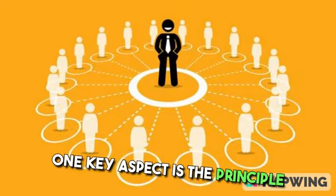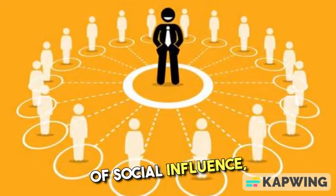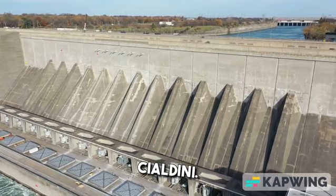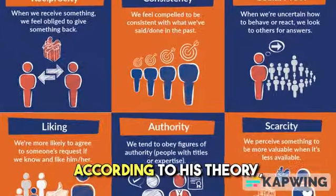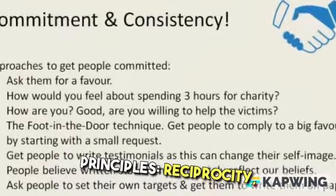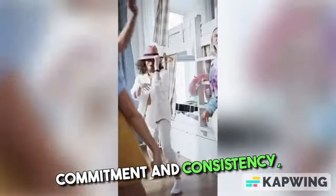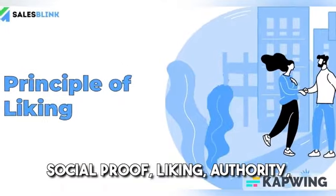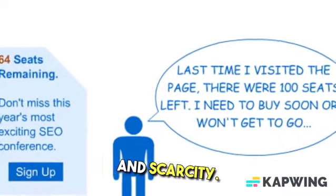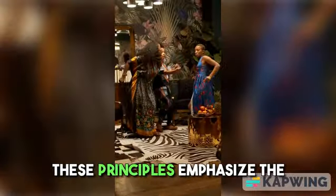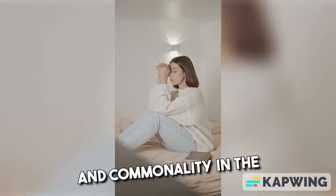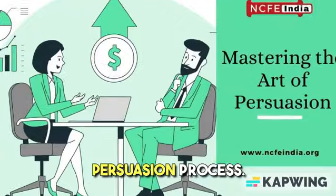One key aspect is the principle of social influence, as delineated by Robert Cialdini. According to his theory, there are six persuasive principles: reciprocity, commitment and consistency, social proof, liking, authority, and scarcity. These principles emphasize the importance of relationships, trust, and commonality in the persuasion process.